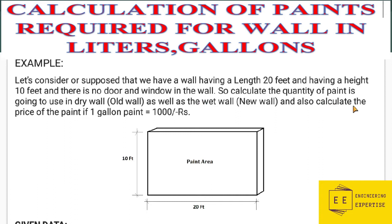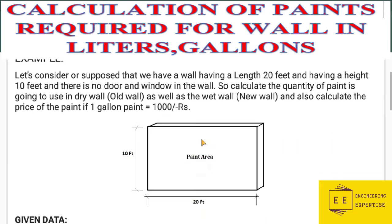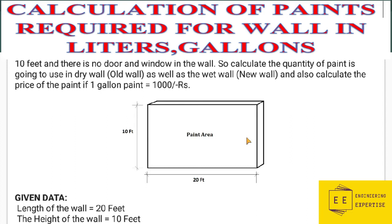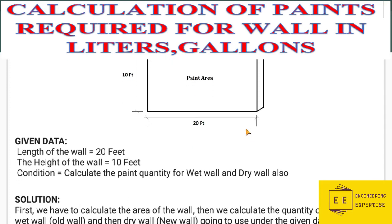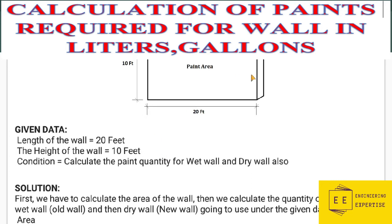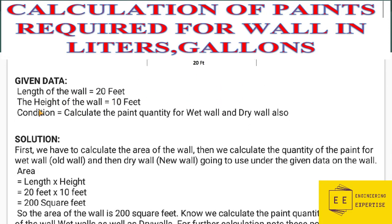We will also calculate the price of the paint if one gallon of paint equals 1000 rupees — this is an assumed value, not the exact price, which can vary by place. This is the wall paint area: 10 feet height and 20 feet length for one side of the wall. We calculate one side, then multiply by two for the other side. Given data: length of wall is 20 feet, height of wall is 10 feet.